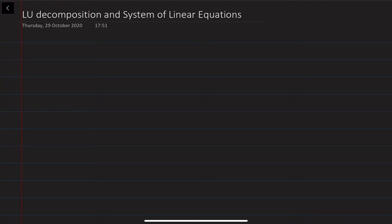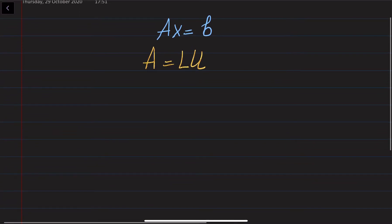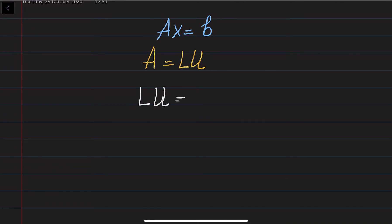If you are given the system of linear equations in matrix form as Ax = B, and at the same time you know how to decompose A as LU, then you are going to substitute A with its LU decomposition and solve that system. So essentially we write LU times x equals B.